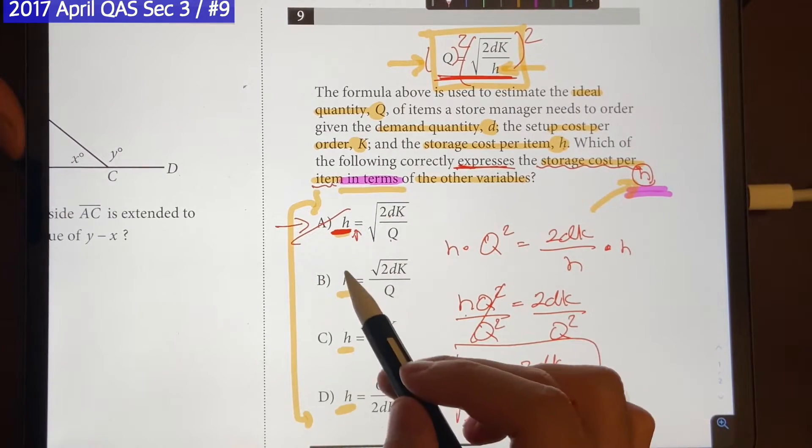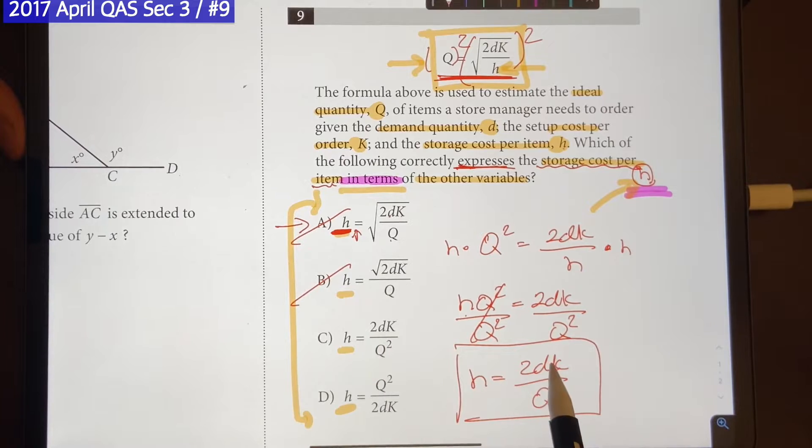We don't see a root anywhere. There's 2DK, 2DK, Q squared. That's going to be the correct answer. H equals—no, Q squared has to be on the bottom. That's going to be out. So your correct answer is going to be choice C.